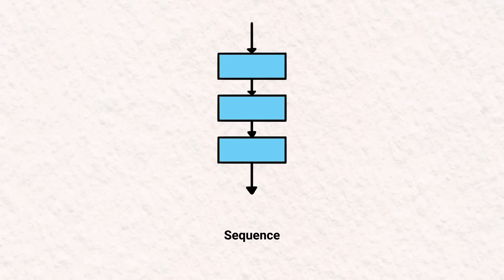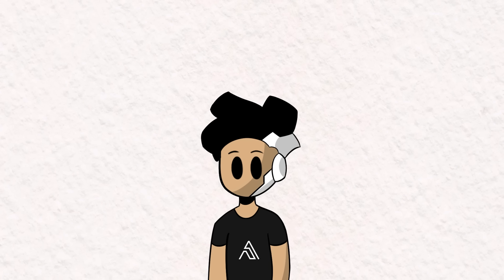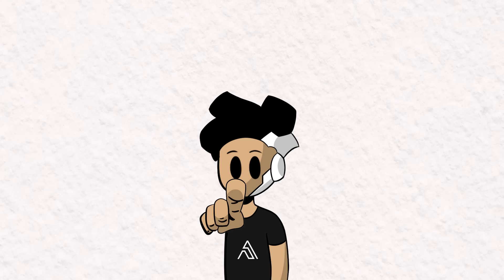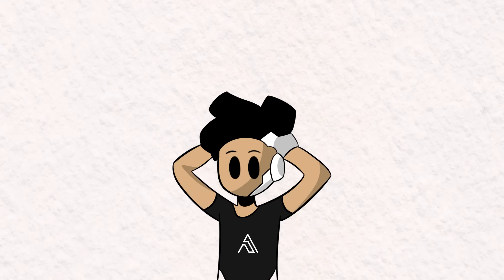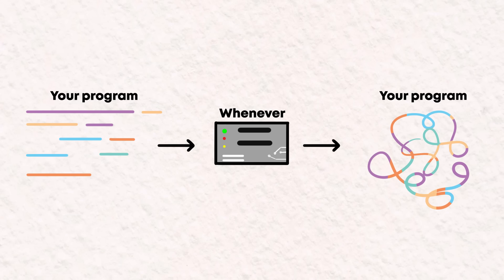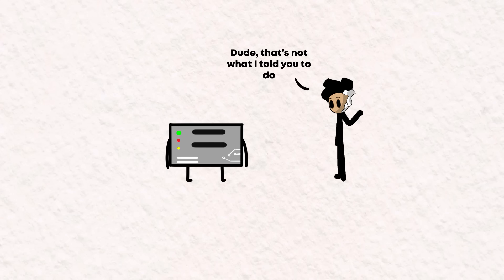In a sequential flow, each statement is executed one by one in order from top to bottom. For example, say you're making a bowl of cereal — you would first get a bowl, add cereal, and then add milk. If you do it any other way, you're genetically defective. Anyway, imagine a programming language that did not have control flow — a language that executed your code whenever it wanted. Well, imagine no more because this is exactly what this language does.